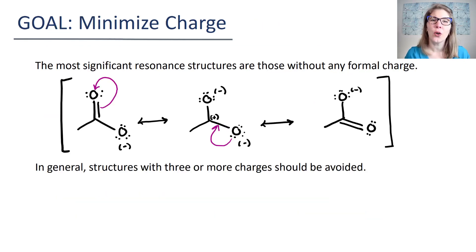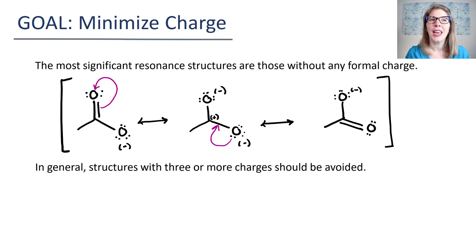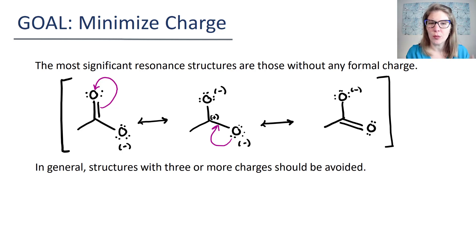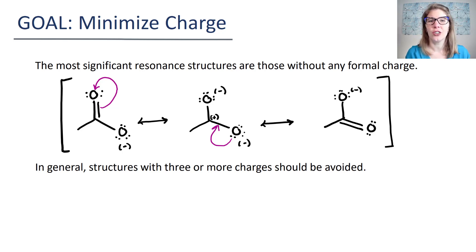Our first goal is to minimize charge. A lot of resonance structures are going to have a charge — you can't get away from having one or two charges. But what you can do is make sure that when you're drawing your resonance structure set, that you're only drawing things that contribute significantly to the resonance hybrid, which will exclude structures that have three or more formal charges.